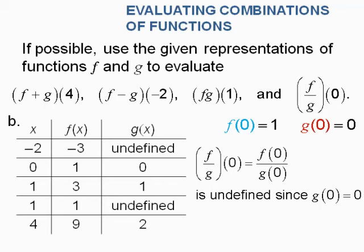Sorry about that typo — I'll blame the sinus infection. For the last one, f divided by g of 0, written as f of 0 divided by g of 0: when x is 0, f of x comes out to 1, but g of x comes out to 0 in the chart. Since g of 0 is 0, this is undefined — another one we can't do.